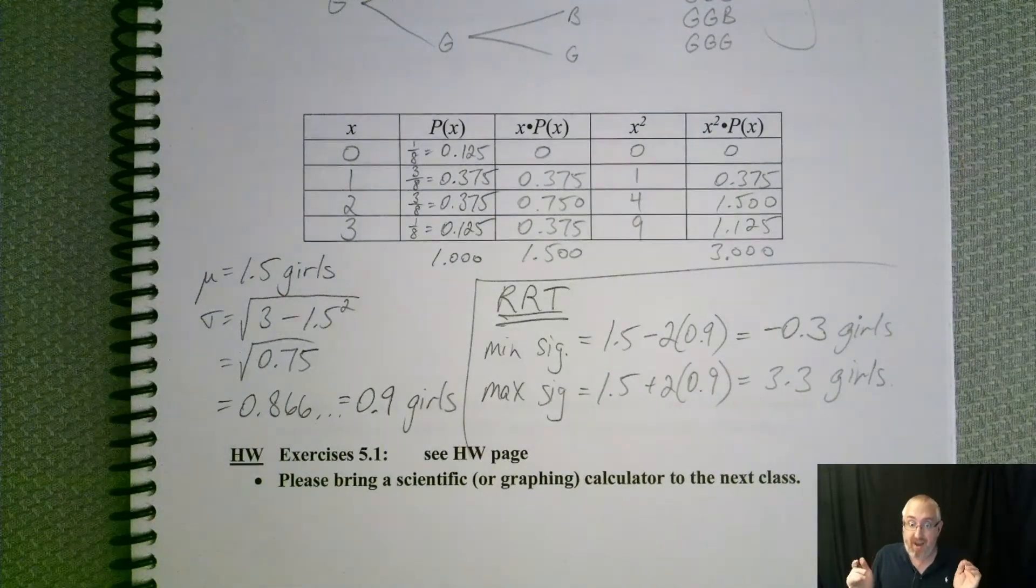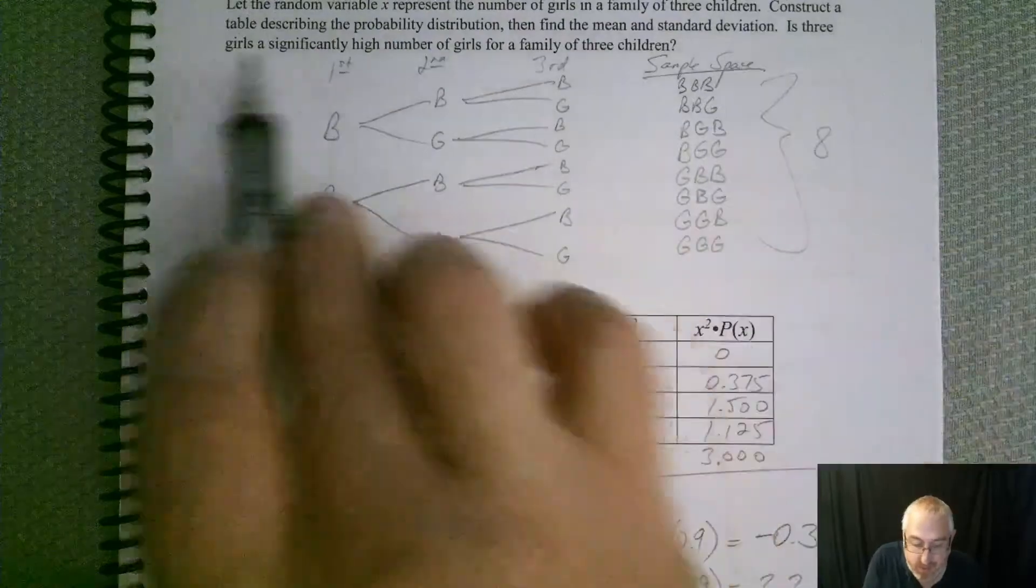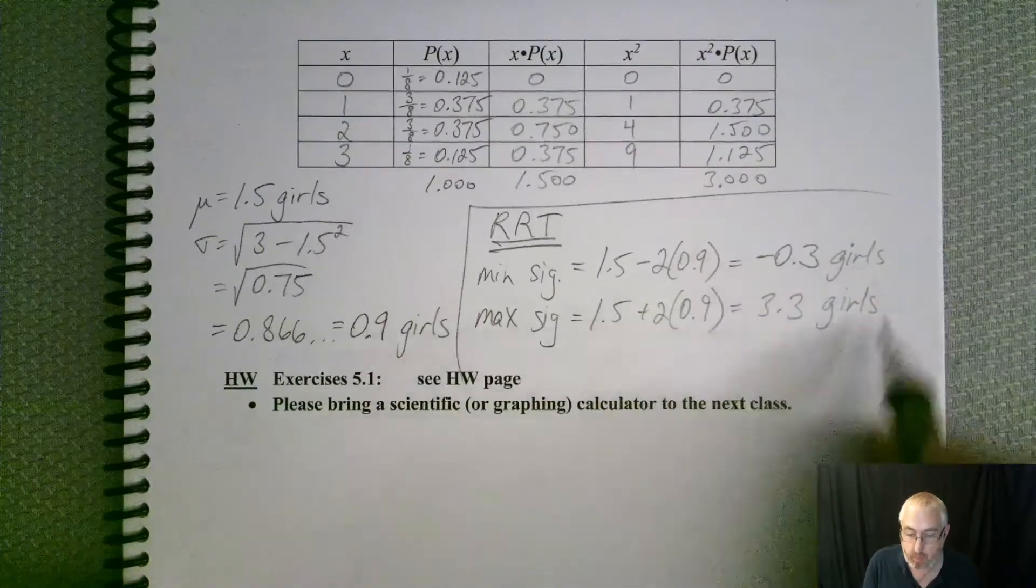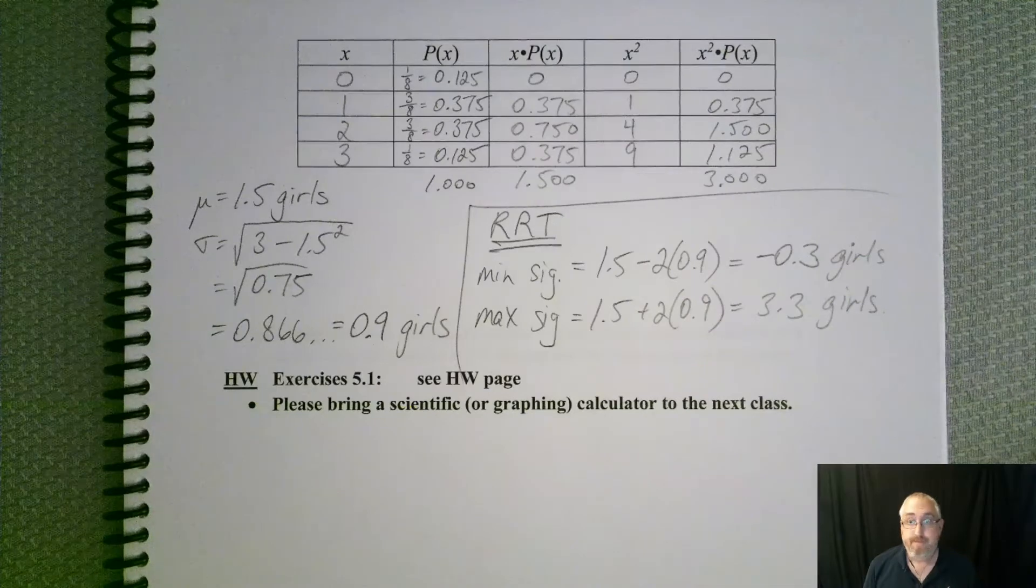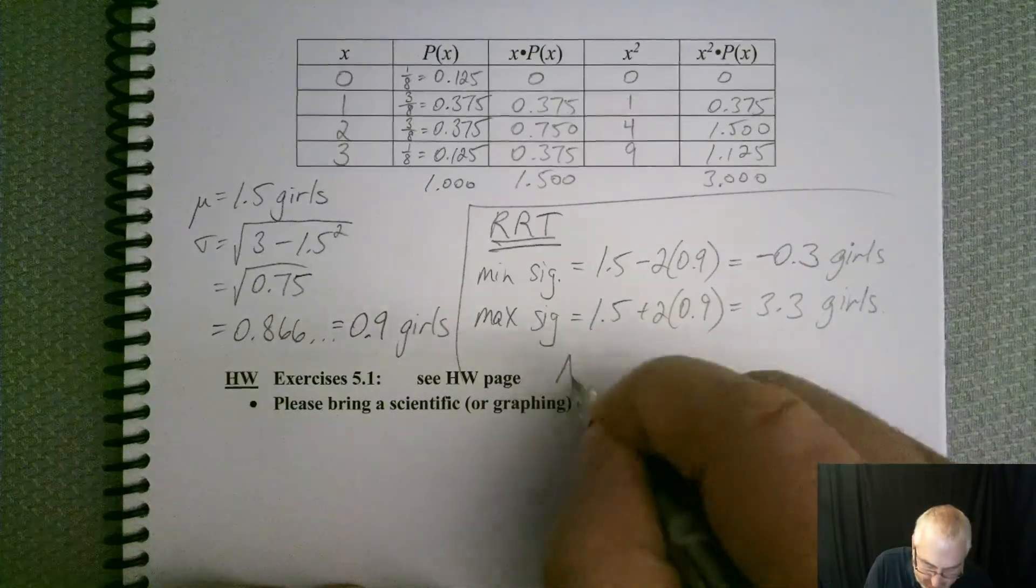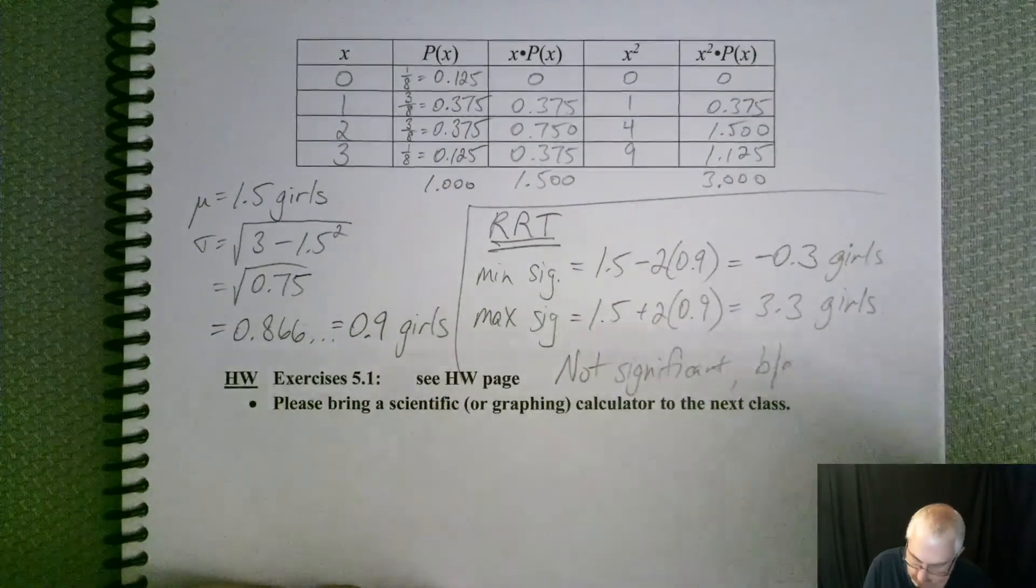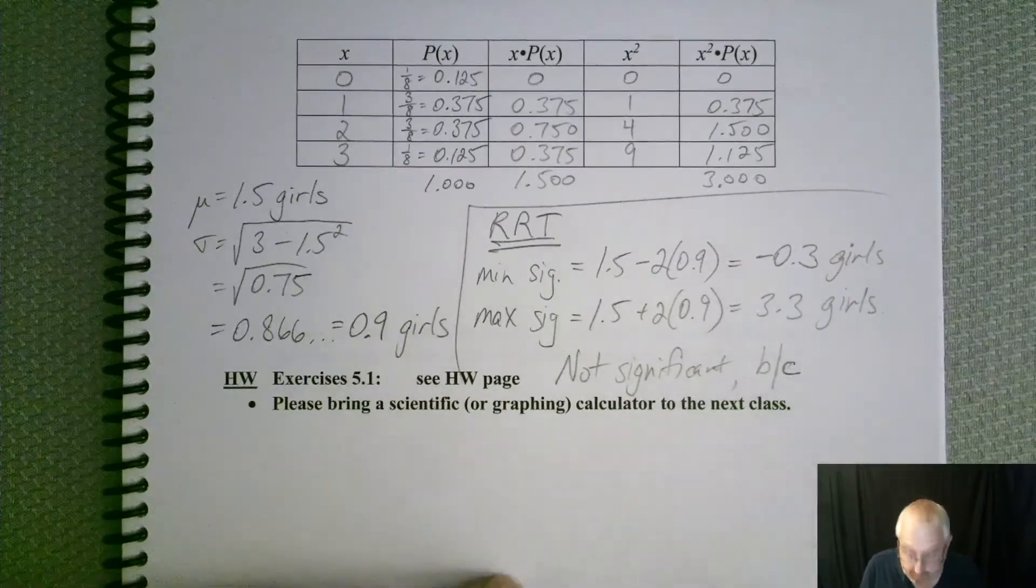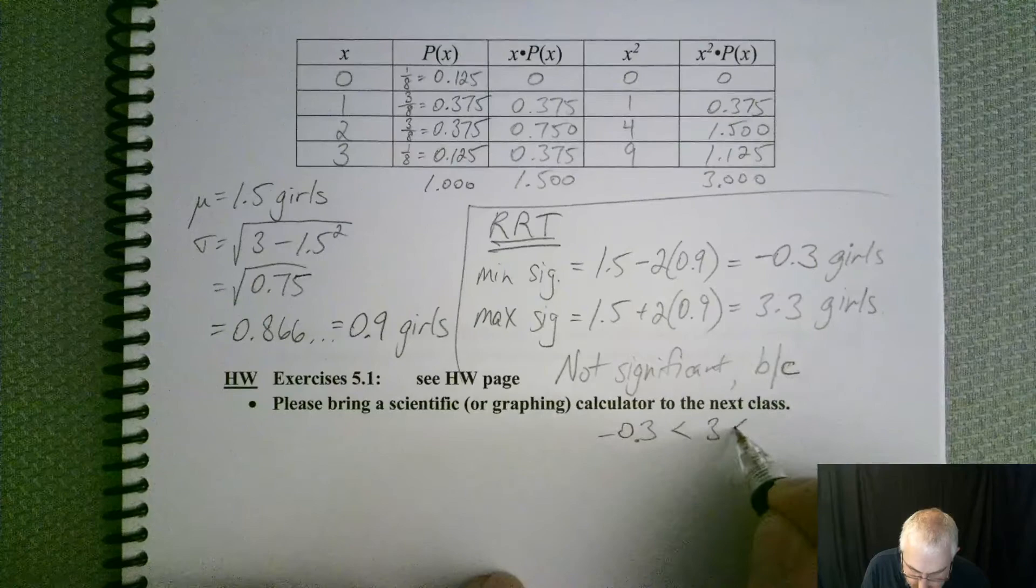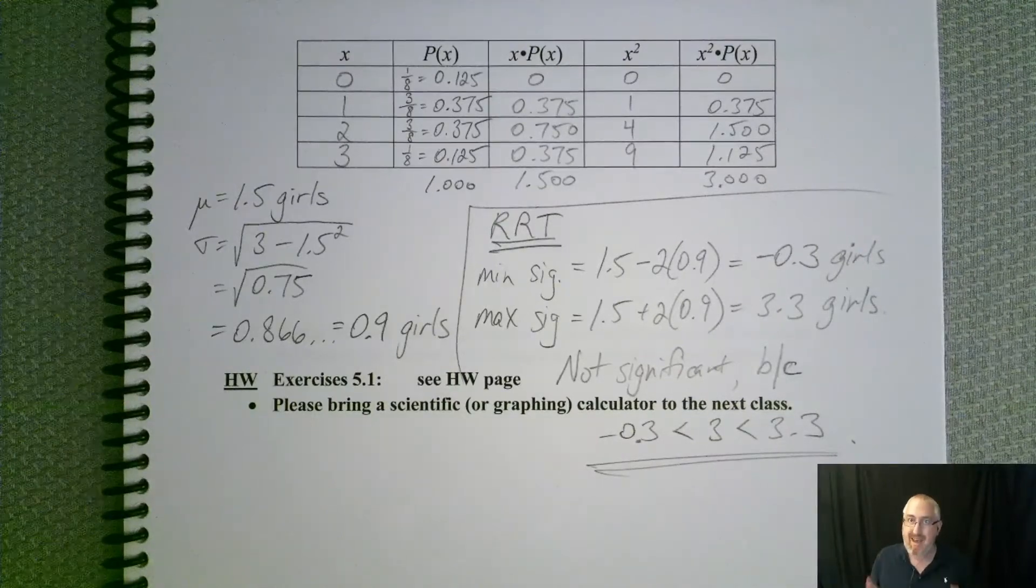So now we have those significant cutoffs, so now we should be able to answer the question. So let's go back one more time. It says, is 3 girls a significantly high number of girls? Well, where does 3 fall with regards to these cutoffs? It's between, right? It's between those two cutoffs. And if it's between, that means it's not significant. So not significant because, and if you wanted to do inequality.